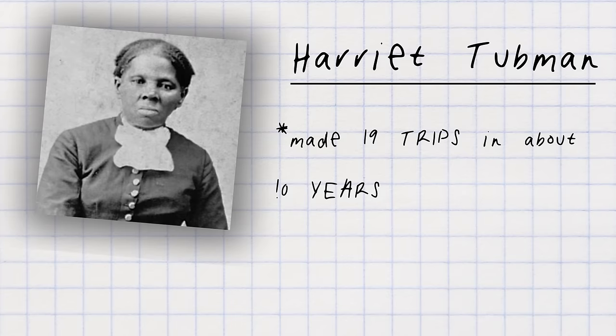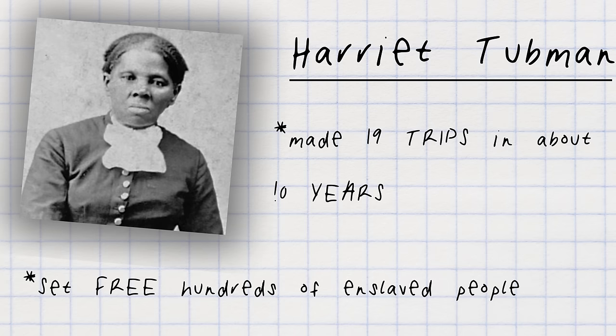One of the most courageous and famous people during these times was Harriet Tubman. Between 1850 and 1860, Tubman made 19 trips from the north to the south following the Underground Railroad and set free hundreds of enslaved people. Slavery was one of the primary causes of the American Civil War, and both the Union's victory and the passage of the 13th Amendment in 1865 ended slavery in the United States forever. And with it, the Underground Railroad became history.